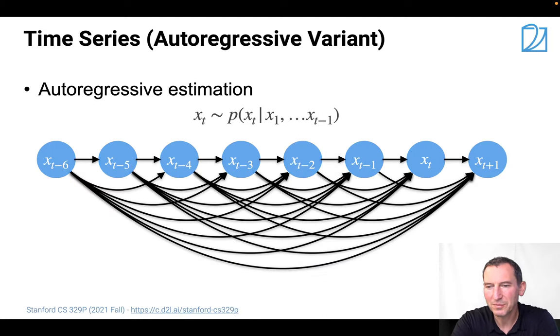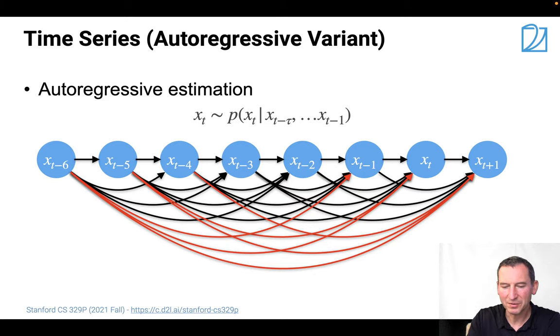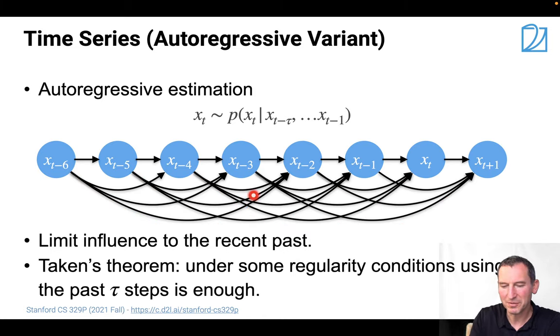So here's a simple way how you can do this. Suppose I have this autoregressive problem, so xT is drawn from p of xT given x1 through xT minus 1. And that's this graph here. What I can then do is I can say, well, maybe I don't need all those really long range dependencies, so they're just drawn in red now, and then I can throw them all away. So now I only have the black ones. And it turns out this isn't just a hack - there's a theorem which says that this is feasible. Tarkin's theorem says that under some benign regularity conditions, using the past tau steps is enough.